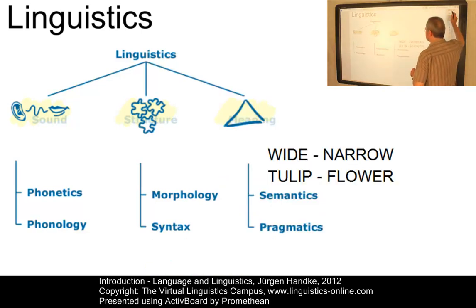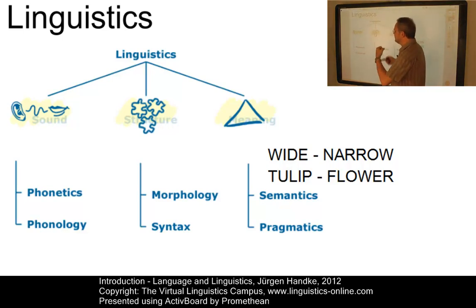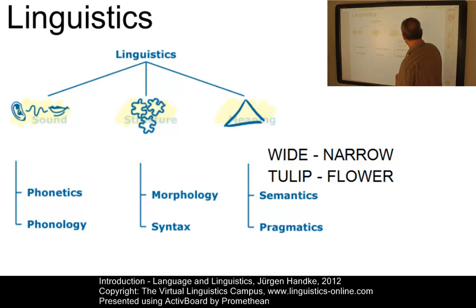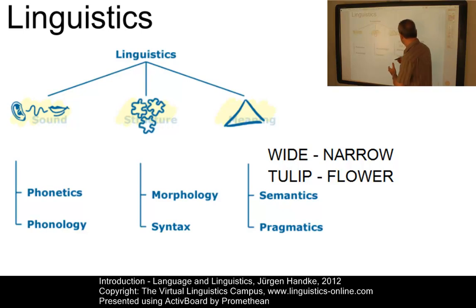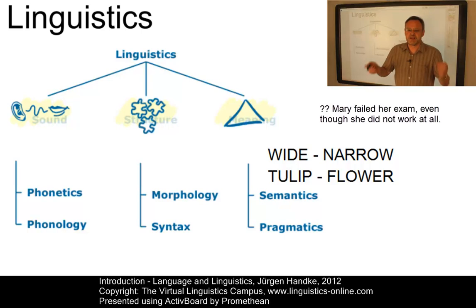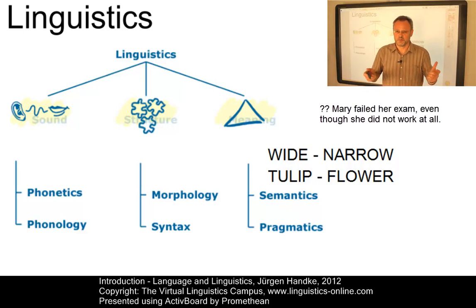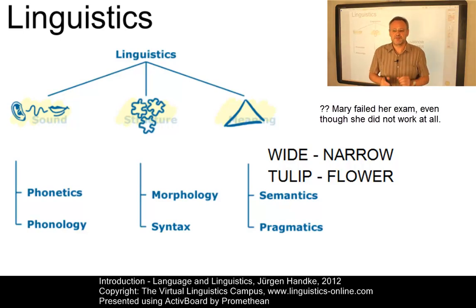Let's look at the branch that deals with meaning. We could look at the meaning of words or sentences in the branch referred to as semantics. Interesting questions include: what is the relationship between items such as 'wide' and 'narrow'? It is certainly different from the relationship between 'tulip' and 'flower'. Or we could ask about sentences such as 'Mary failed her exam even though she didn't work at all' — the logic behind such a sentence is discussed under sentence semantics.